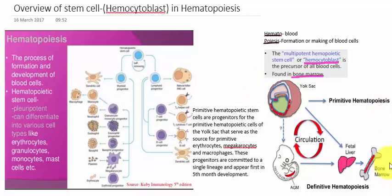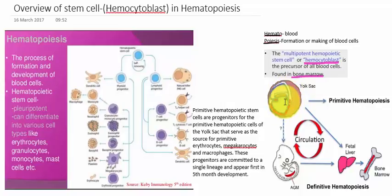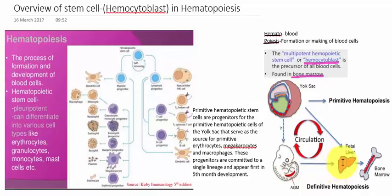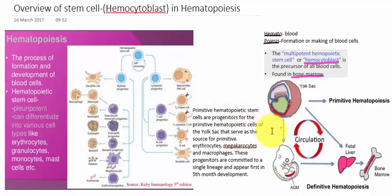Hematopoiesis is found in the bone marrow in adults, but in the case of primitive hematopoietic stem cells, the progenitors are the primitive hematopoietic cells of the yolk sac, which serve as the source for erythrocytes. These progenitors are committed to a single lineage and first appear in the fifth month of fetal development. The sequence is: yolk sac → fetus → fetal liver → bone marrow.